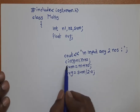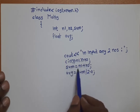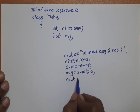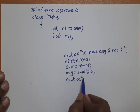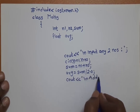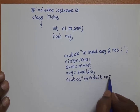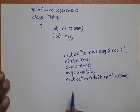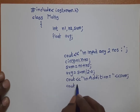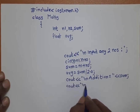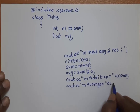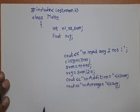Before the cin input statement we put the cout output statement. This indicates reading values for n1 and n2, this indicates calculating sum, this indicates calculating average. To display sum and average we use cout: cout << "\n\nAddition = " << sum and then cout << "\nAverage = " << avg. Then close curly bracket and semicolon.